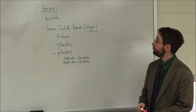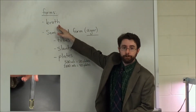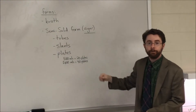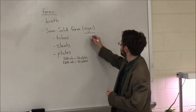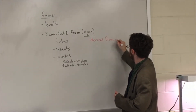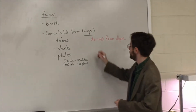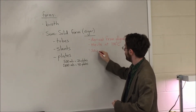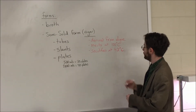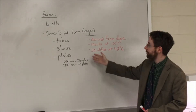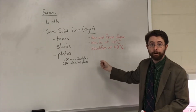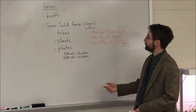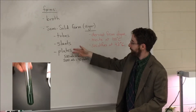Our growth media can come in two forms. One type is where we prepare a liquid suspension or broth. Or we can prepare the growth media in a semi-solid form using a solidifying agent known as agar. Agar is derived from algae and has the interesting property that it melts at 100 degrees Celsius but solidifies at 42 degrees Celsius. This allows us to grow microorganisms on a semi-solid form at relatively high temperatures. Semi-solid forms that we can use are tubes, slants, or plates.